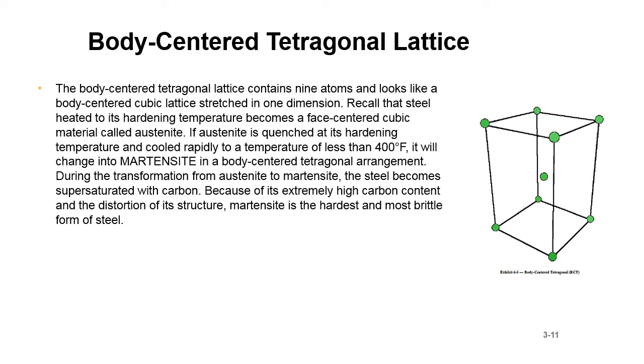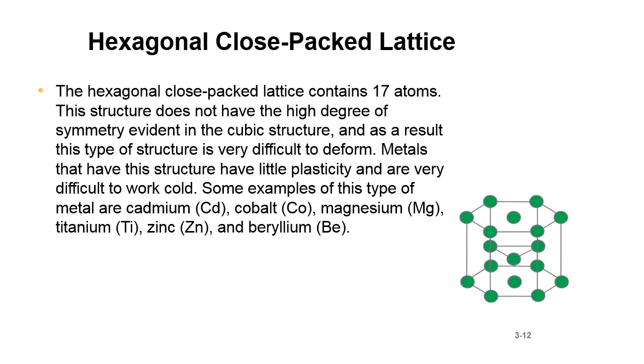Hexagonal close-packed lattice. The hexagonal close-packed lattice contains 17 atoms. This structure does not have the high degree of symmetry evident in the cubic structure, and as a result this type of structure is very difficult to deform. Metals that have this structure have little plasticity and are very difficult to cold work. Some examples of this type of metal are cadmium, cobalt, magnesium, titanium, zinc, and beryllium.